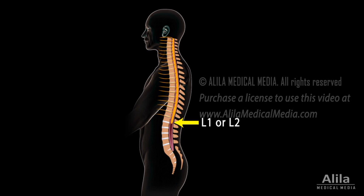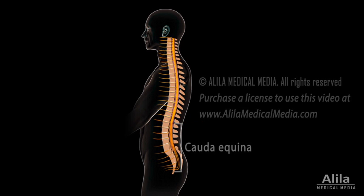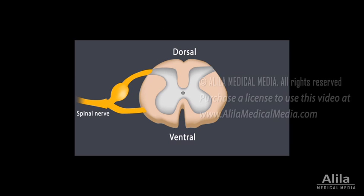In the lower lumbar and sacral regions, nerve roots descend within the spinal canal before exiting, forming the cauda equina. In cross-section, two types of nervous tissue can be seen in the cord: a butterfly-shaped central core of gray matter, and a surrounding white matter.